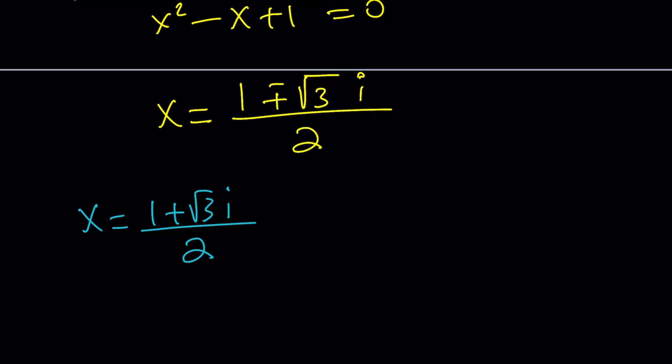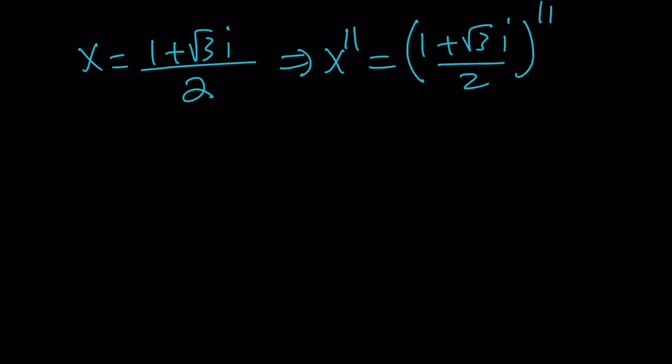I'm going to raise it to the 11th power, so x to the 11th is just going to be this number raised to the 11th power. Now, if you raise this to the 11th power, you're going to have to think about this number raised to the 11th power divided by 2 to the power of 11, which I believe is 2048. There's a game by that name too, right? Anyways, what do you do with this? You can use the binomial theorem or use something else.